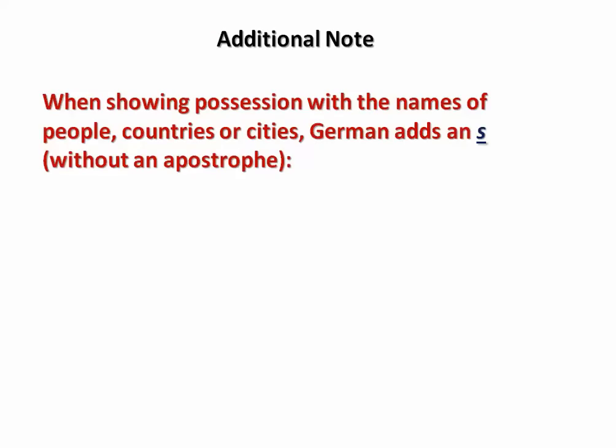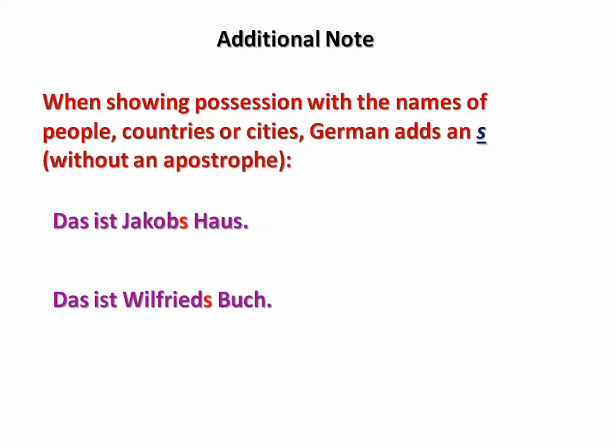One additional note: when showing possession with the names of people, countries, or cities, German adds an S without an apostrophe. So 'das ist Jakobs Haus,' or 'das ist Wilfrieds Buch,' or 'das ist Atlantis Flughafen.'